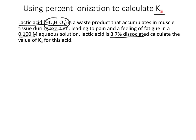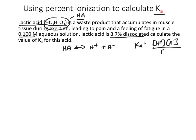Lactic acid is represented by its structural formula; however, we can treat it as a monoprotic acid and set up our ICE table using a generic acid relationship: HA → H⁺ + A⁻. The equilibrium expression is Ka equals [H⁺][A⁻] divided by [HA]. Setting up the ICE table with initial concentration 0.100 M, the equilibrium values are 0.100 minus X for HA, and X and X for H⁺ and A⁻ respectively.